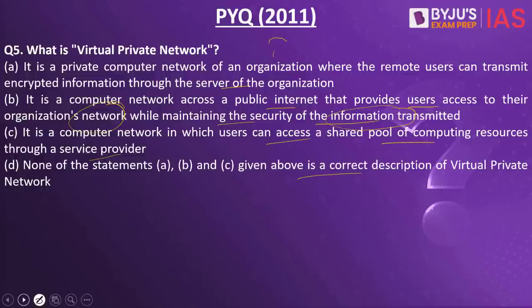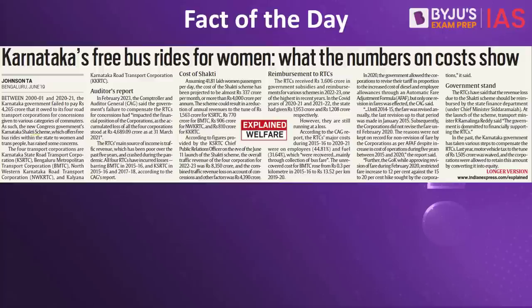Now let's look into the fact of the day: the Shakti Scheme. The Shakti Scheme is one of the initiatives taken by the Karnataka government, whereby all women in the state would be able to travel free of cost in public transport — they need not pay any charges when traveling on public transport. This has two sides: a positive side and a negative side. The chief minister of Karnataka says this will empower women.